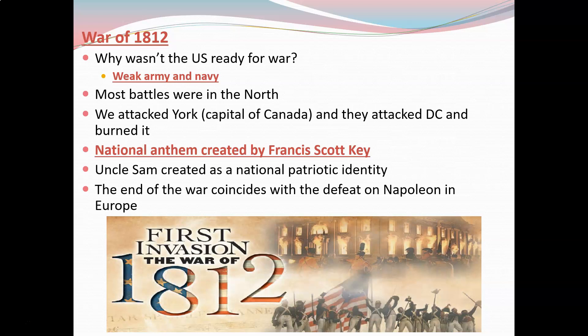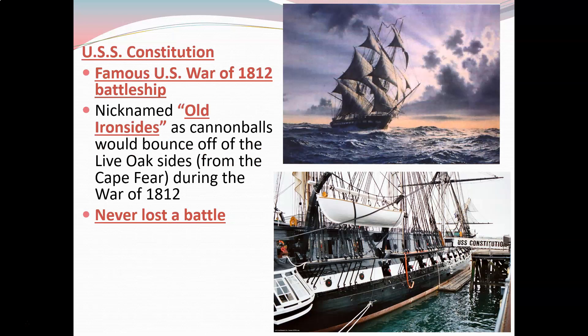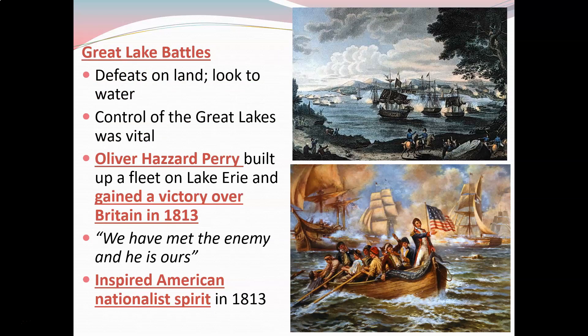Uncle Sam is created as a national patriotic identity during this time, and the end of the war is also going to coincide with the defeat of Napoleon in Europe and France. The USS Constitution was our most important ship — thank God it was a good one, because it never lost a battle. Cannonballs would actually bounce off of its live oak sides during the War of 1812. These live oak trees were pulled from the Cape Fear, and this ship withstood it all. The USS Constitution is considered one of the main reasons we were so successful at sea, but also a sign of nationalism and growing patriotism, because it inspired people — as long as we have the USS Constitution, we're going to win.